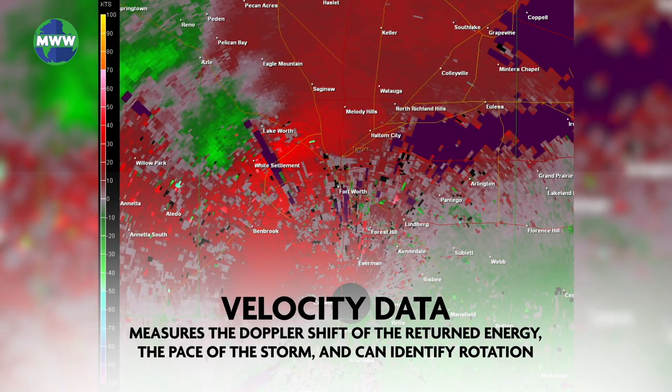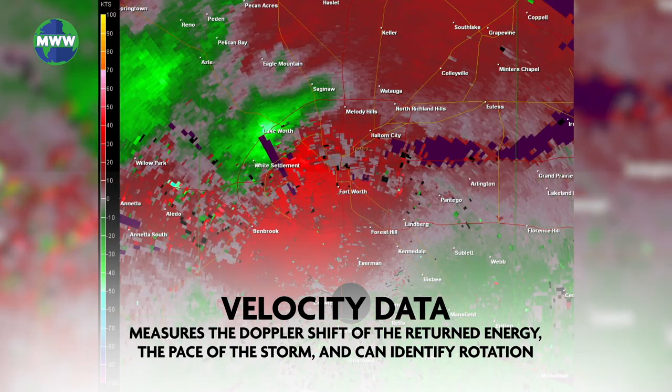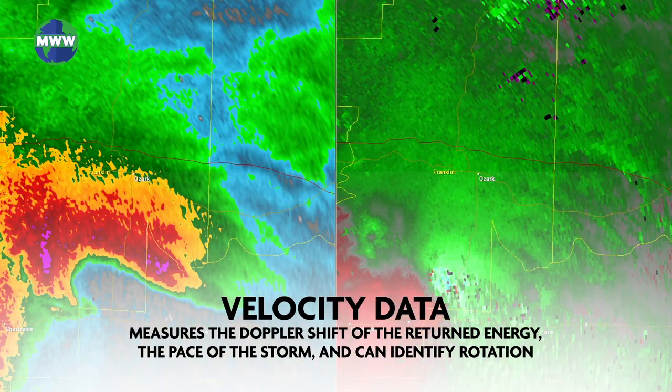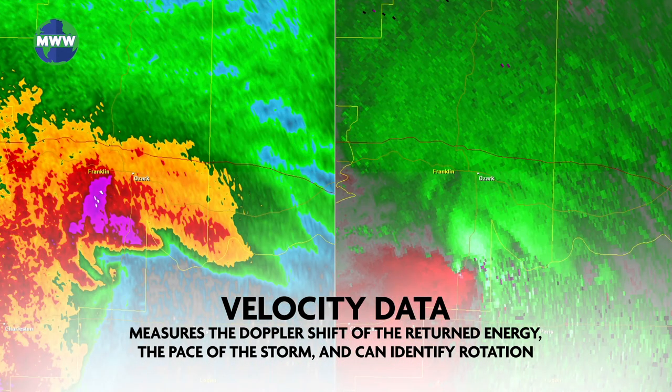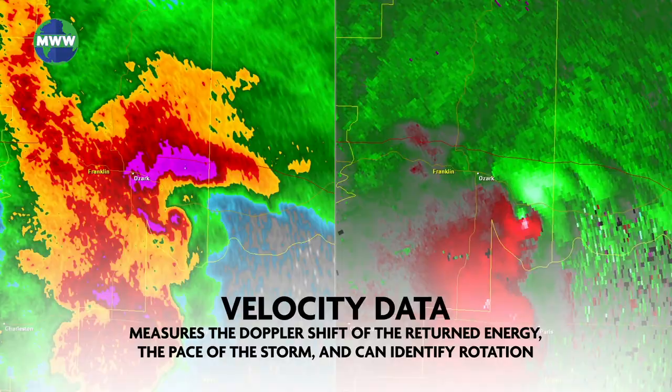Velocity data measures the Doppler shift of the returned energy, the pace of the storm, and can identify rotation, which could indicate tornadoes.